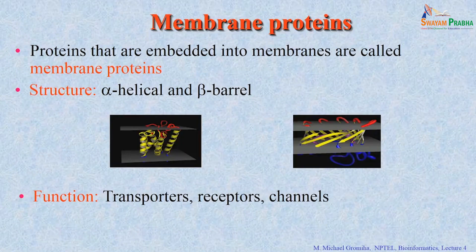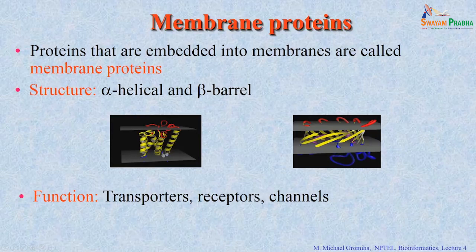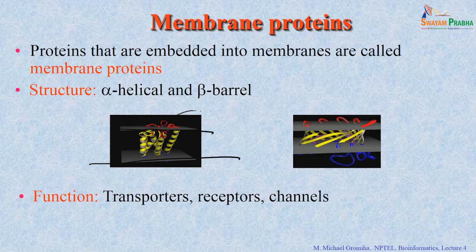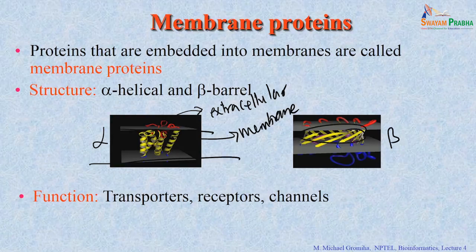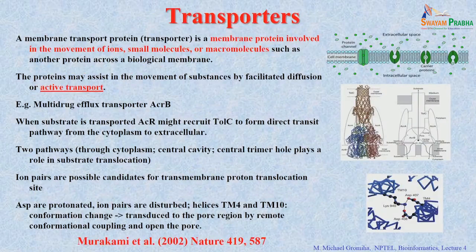We also discussed globular proteins and fibrous proteins. Membrane proteins are embedded into membranes. There are two types: alpha and beta types — you can see the beta barrel conformation. These proteins perform various functions like transporters, receptors, and channels.